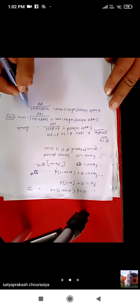Interest after 2 years: 1000 into 10 into 2 upon 100. The zeros cancel out. Now 10 into 10 into 2 equals 100 into 2, which equals 200. So the simple interest after 2 years is 200.